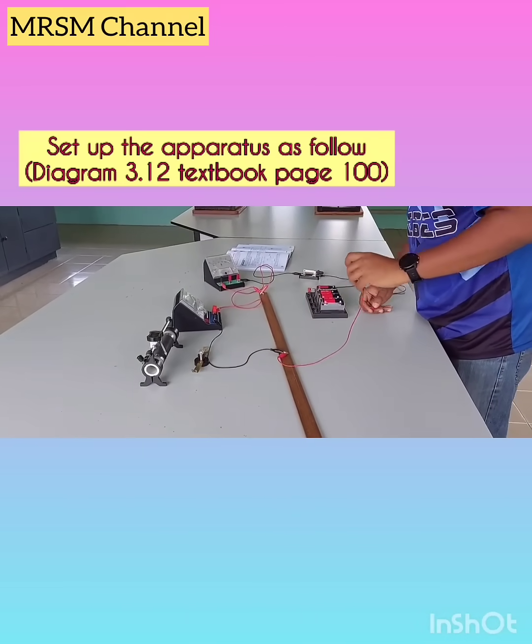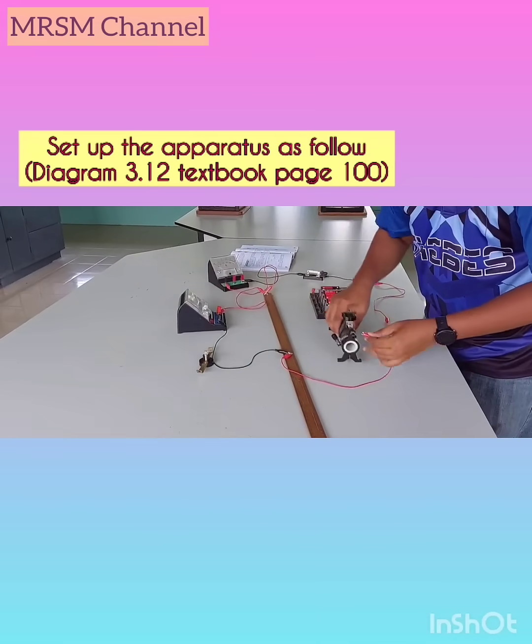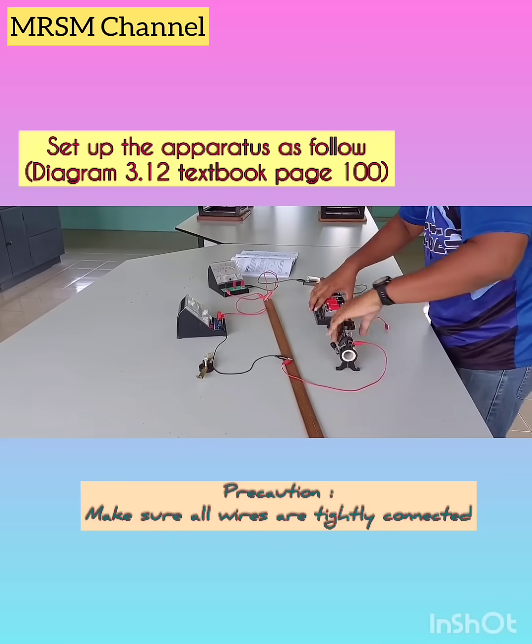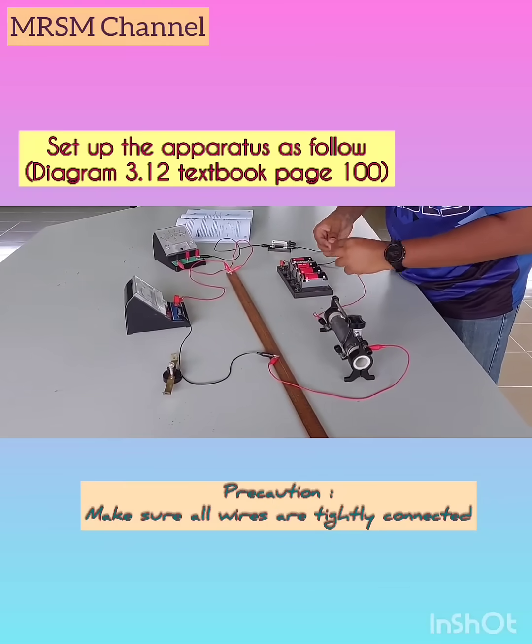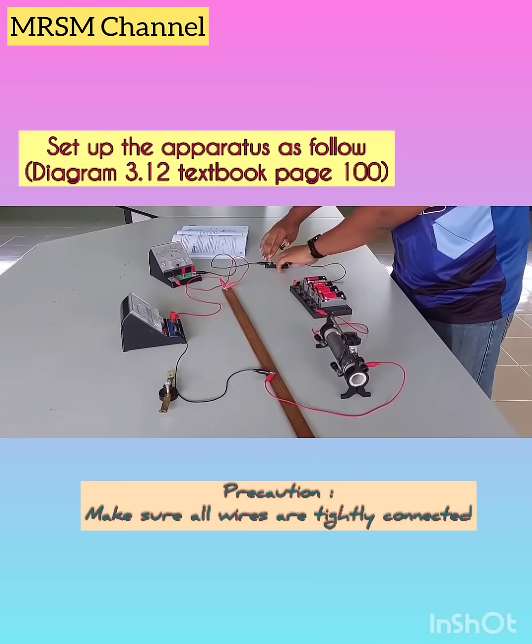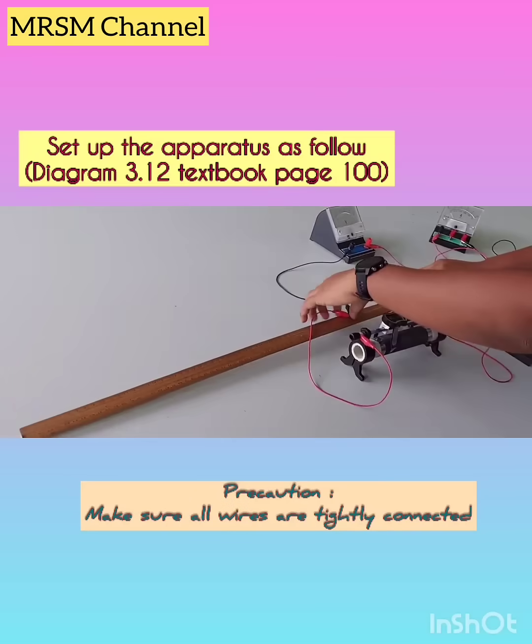Fix the length of constant turn wire at 20 cm long. By doing this, we will fix the resistance in this experiment as the length of constant turn wire is kept constant.